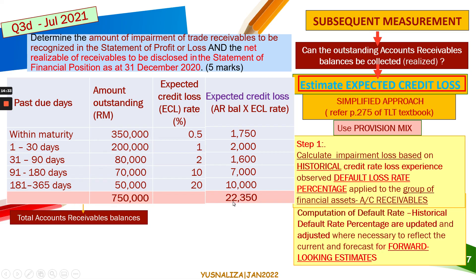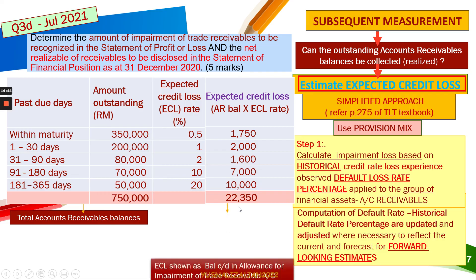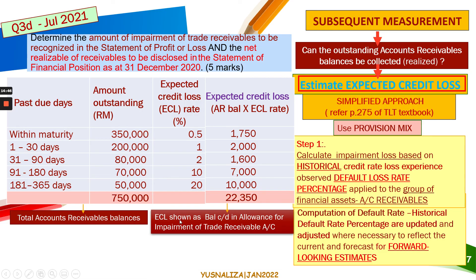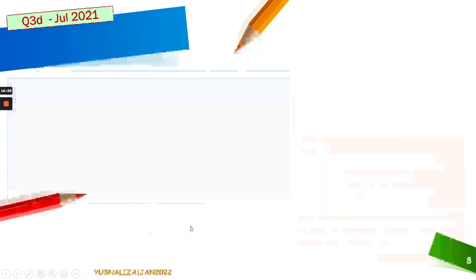The total expected credit loss comes to $22,350. That is the amount that will be shown as the allowance for impairment of trade receivable balance — the ECL allowance carried down. You will then be asked to prepare the statement of movement of the allowance for impairment of trade receivable.